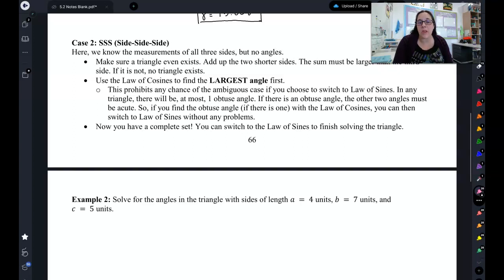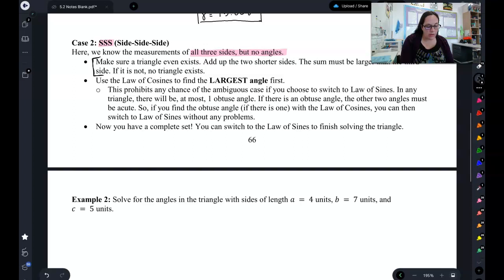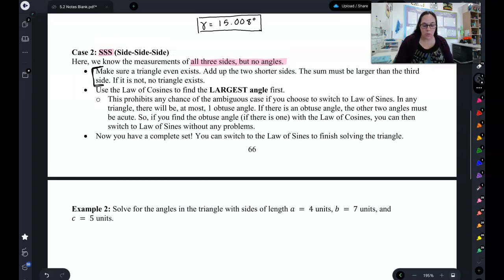The second case where we use the law of cosines is side, side, side. This is where we know the measurements of all three sides, but no angles. If this happens, you want to make sure, number one, that a triangle exists.